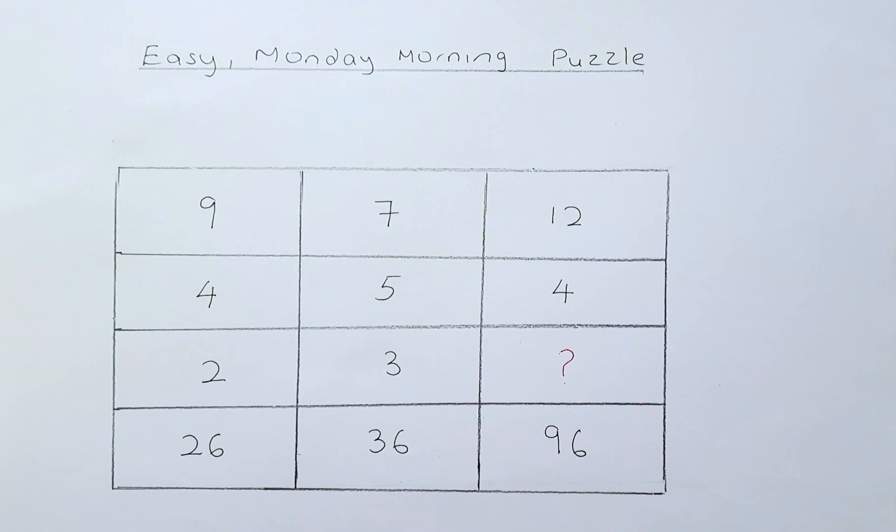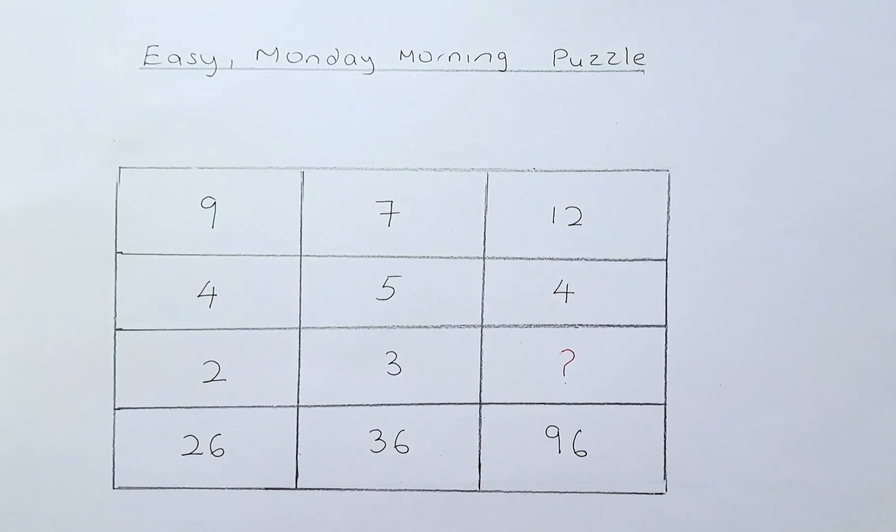The numbers in this puzzle are as follows: 9, 7, 12 on the first row, 4, 5, 4 on the second row, 2, 3 and a question mark on the third row, and 26, 36 and 96 in the final row. So what do you think the question mark represents?